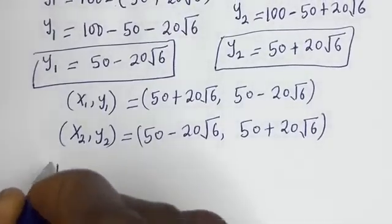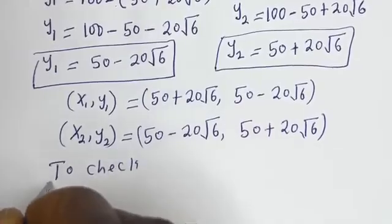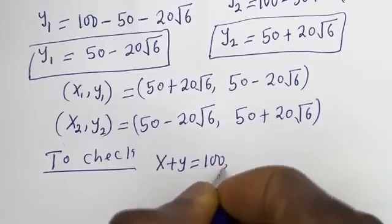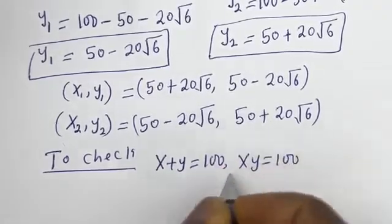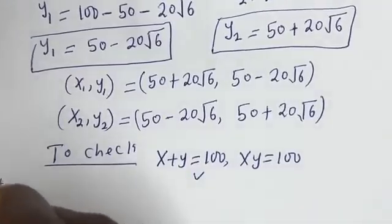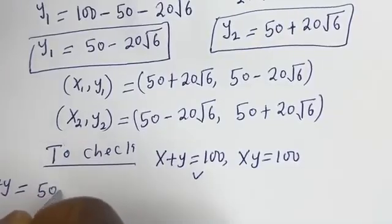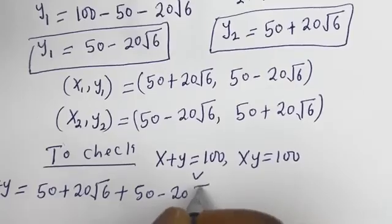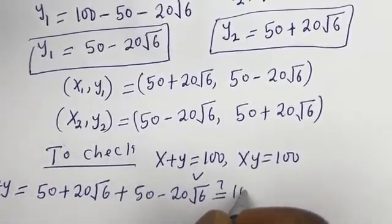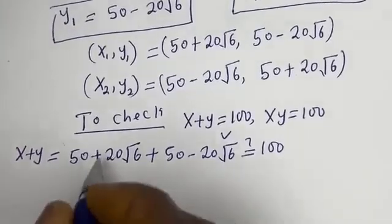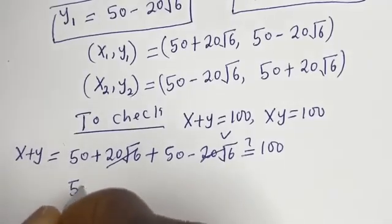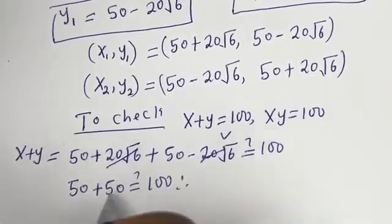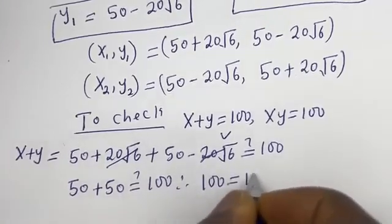To check, we have the given equations: x plus y equals 100, and xy equals 100. For the sum: x plus y equals (50 plus 20 root 6) plus (50 minus 20 root 6). The root 6 terms cancel, leaving 50 plus 50, which must equal 100. And indeed, 50 plus 50 is 100, which is equal to 100. This is true.